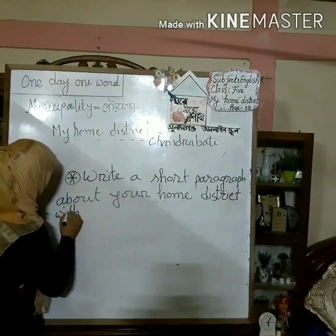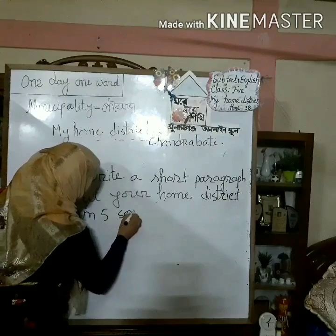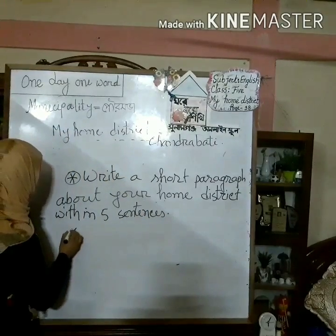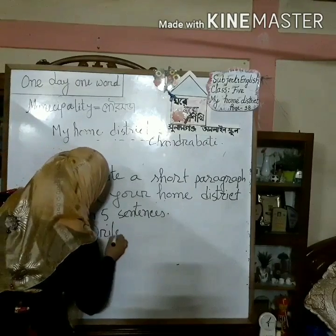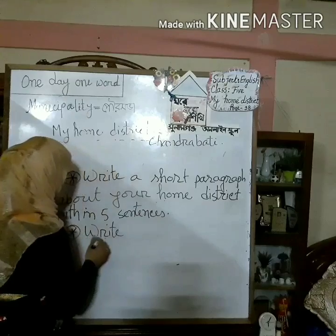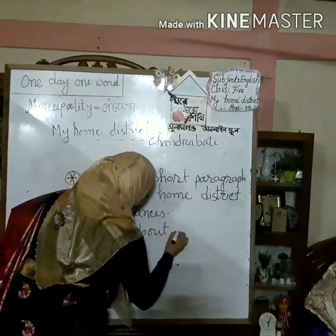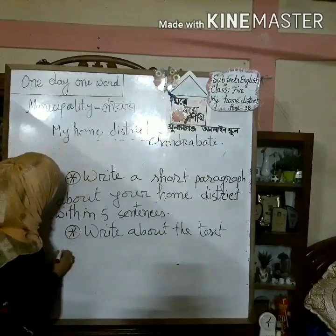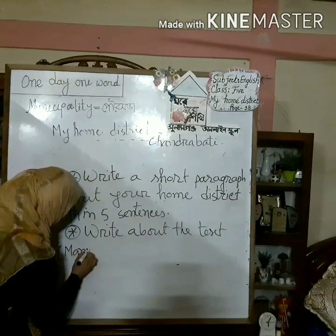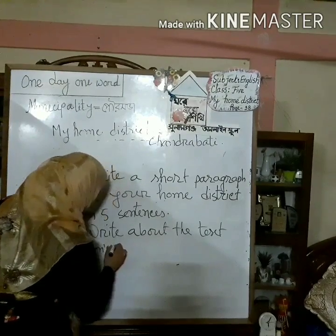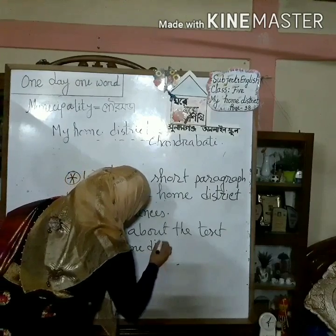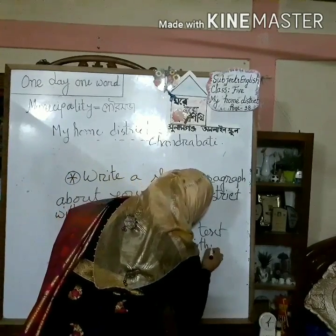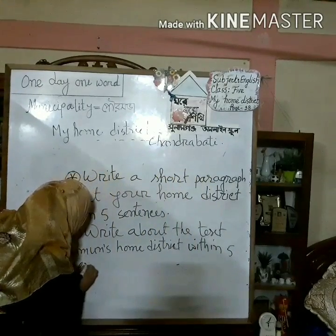Write a paragraph within five sentences. Another homework is to write about the text — write about Mamon's home district from this text, within five sentences.